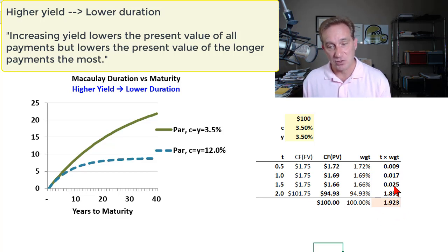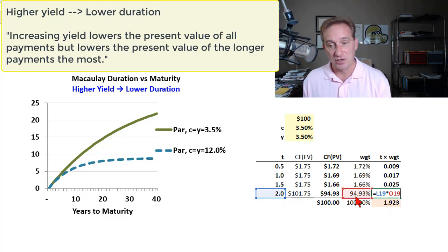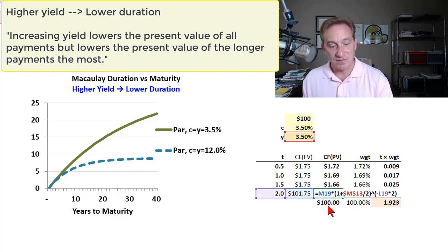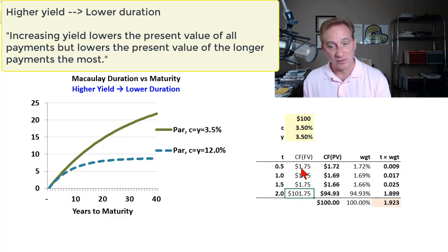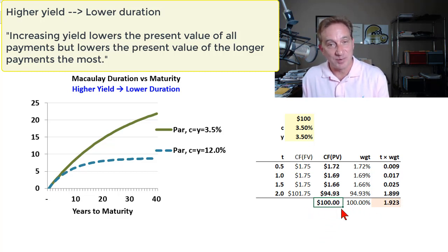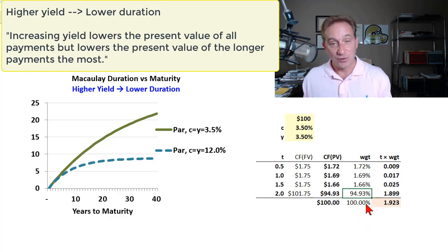The Macaulay duration is the bond's weighted average maturity — the sum of each maturity multiplied by its weight. The weight for each cash flow is the present value of that cash flow as a percent of the bond's price. This two-year bond has four cash flows: three coupons and a final coupon plus principal. Each is discounted to present value at the yield. With price at 100, the weight of the final cash flow is 94.93%.